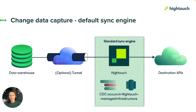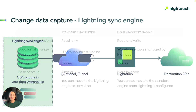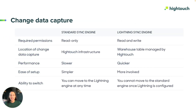With the standard sync engine, the diffing compute is done by Hightech managed infrastructure and the diff file is stored there. Alternatively, diffing can be done entirely in your warehouse with the Lightning sync engine. The computing is done within the source warehouse and the diff file is stored there, achieving faster syncs at higher volumes. Setting up the Lightning sync engine is slightly more complex since it requires granting Hightech read and write access to your warehouse, as compared to read-only access. Depending on your use case's volume, the performance gains may require it.